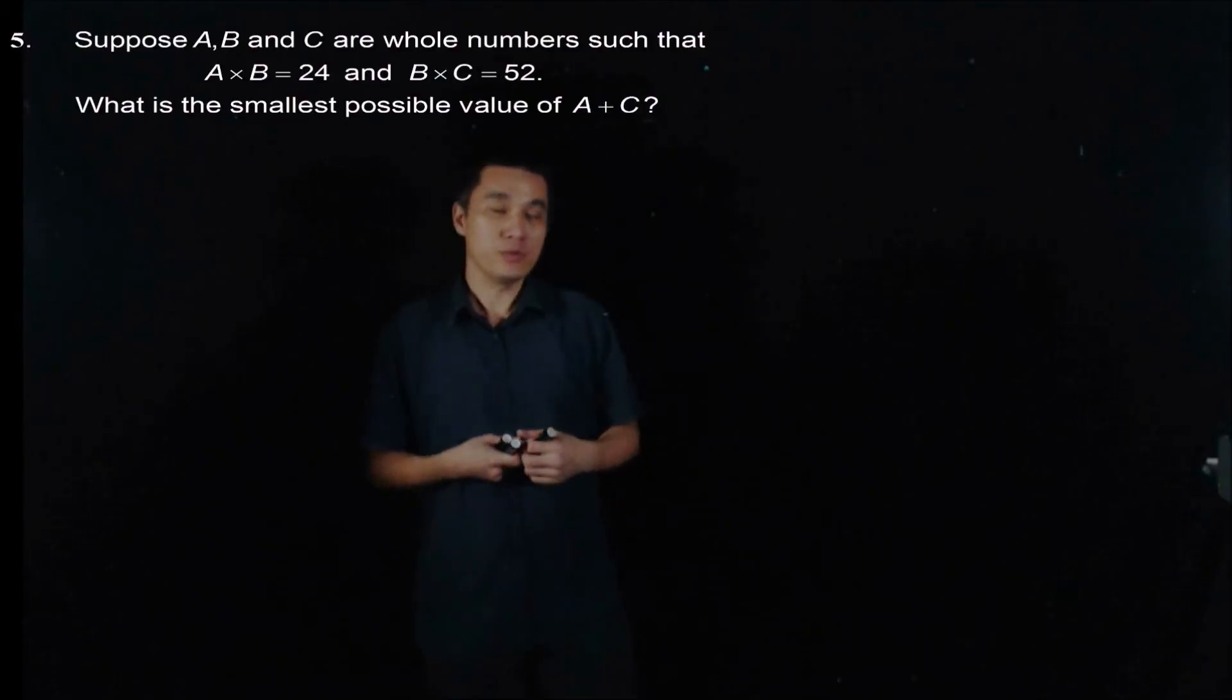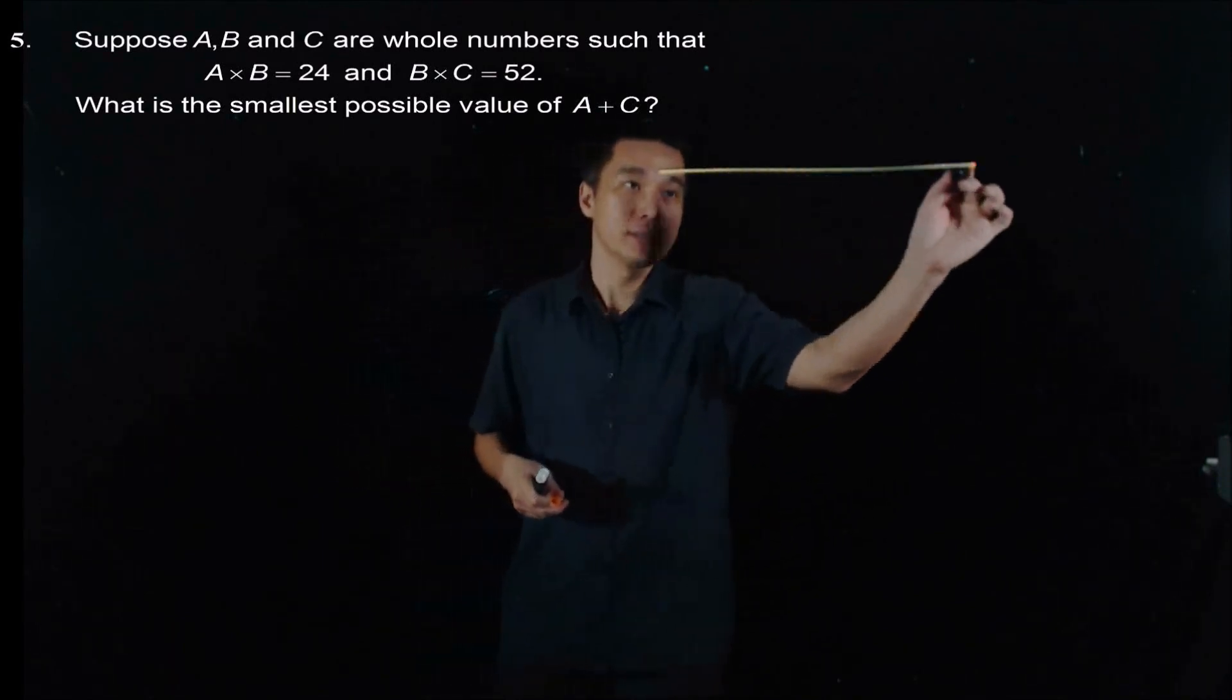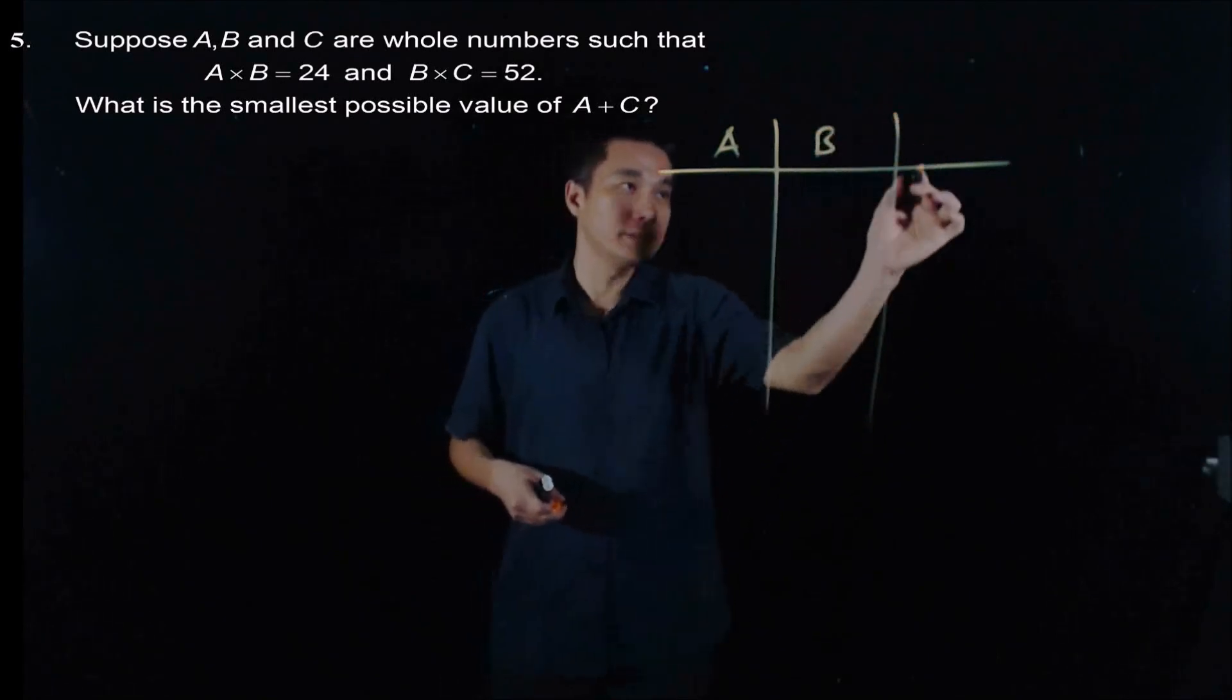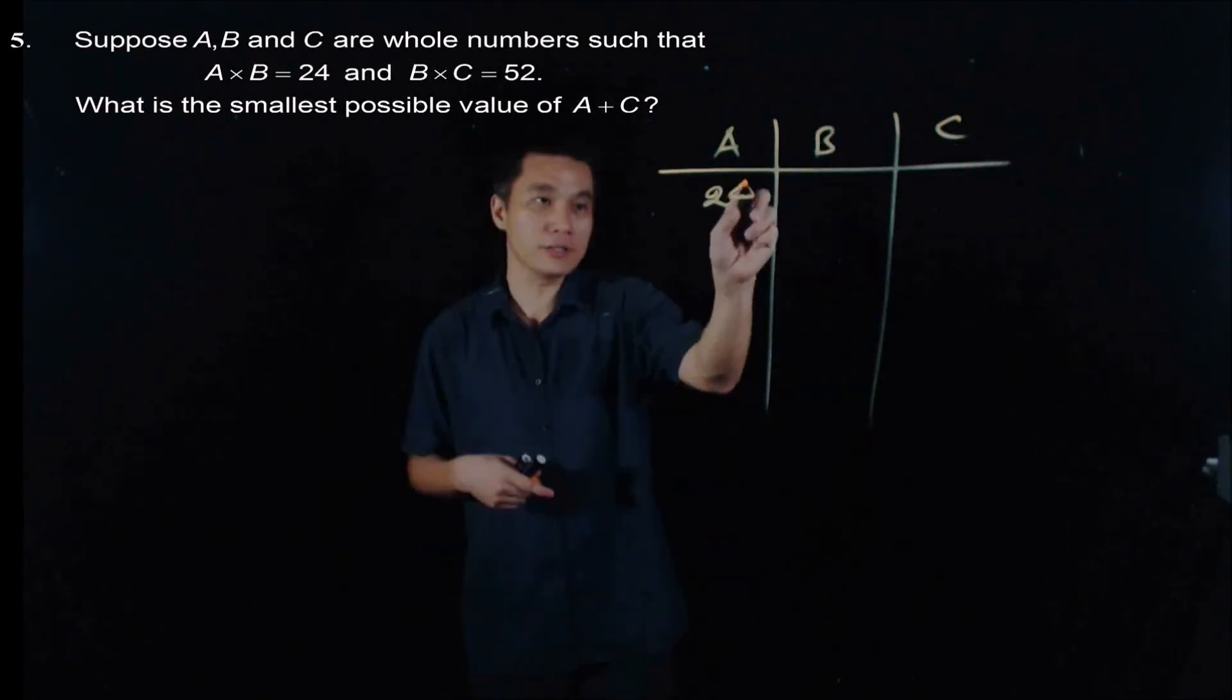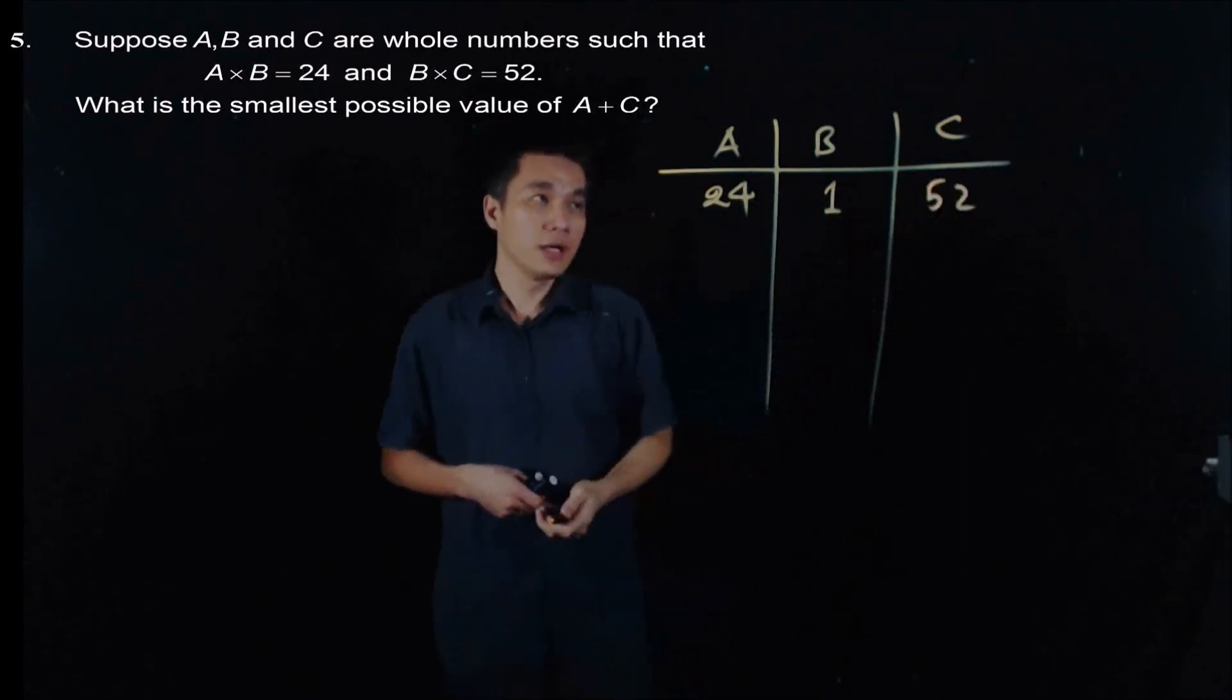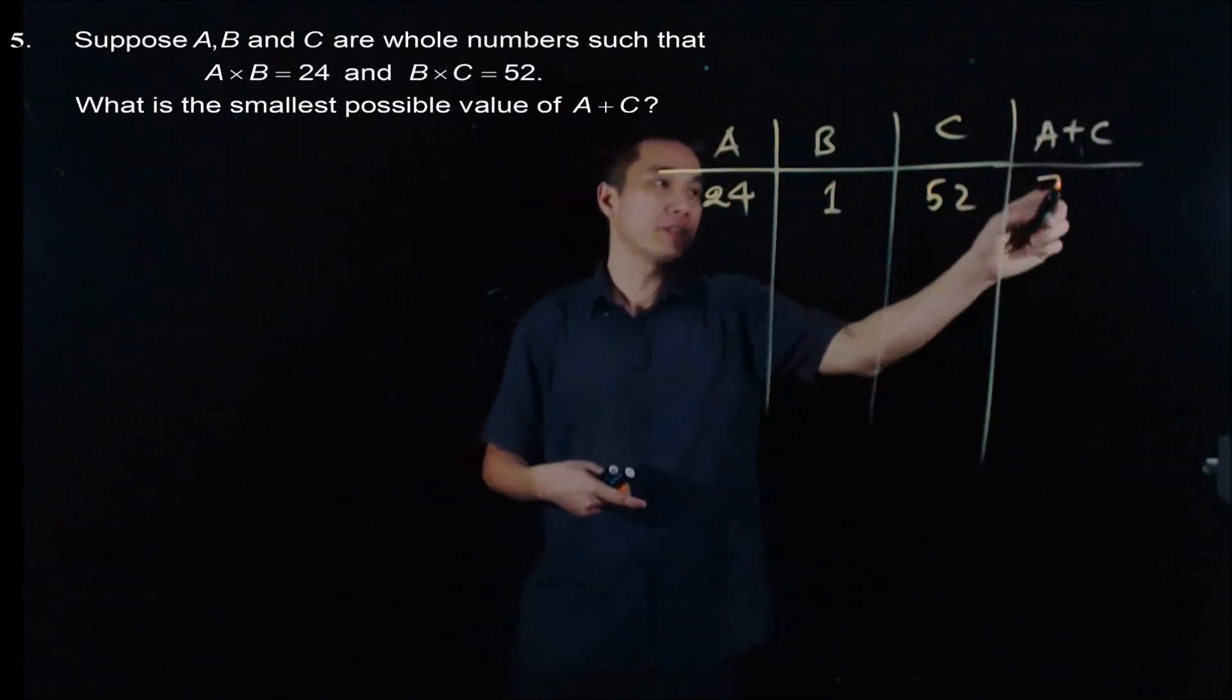One simpler way is we can just list out all the possible values of A, B, and C. So I say this is A, B, and C. I start with 24. And this is 1. If this is 1, this will be 52. And in this case, A times C, this is equal to 76.